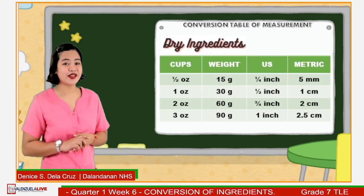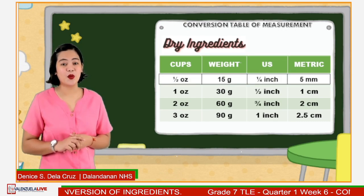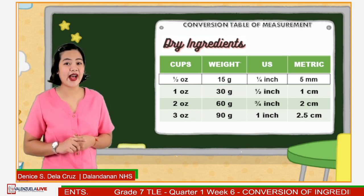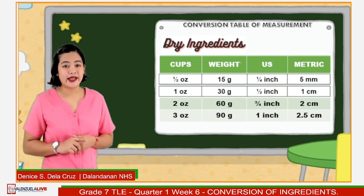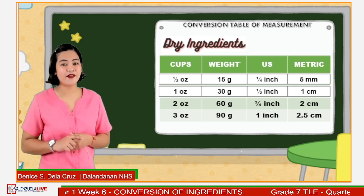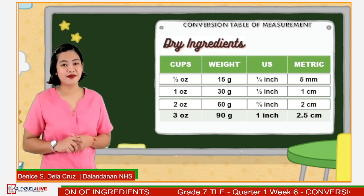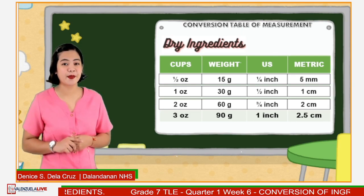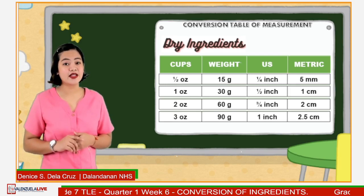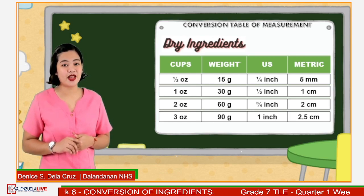This is the conversion table of measurement in dry ingredients. It shows that 1.5 ounce is equivalent to 15 grams, and 50 grams is equivalent to 1.4 inch, and 1.4 inch is equivalent to 5 millimeters. 1 ounce is equivalent to 30 grams, and 30 grams is equivalent to 1.5 inch, and 1.5 inch is equivalent to 1 centimeter. 2 ounces is equivalent to 60 grams, 60 grams is equivalent to 3.4 inch, and 3.4 inch is equivalent to 2 centimeters. 3 ounces is equivalent to 90 grams, and 90 grams is equivalent to 1 inch, and 1 inch is equivalent to 2.5 centimeters.